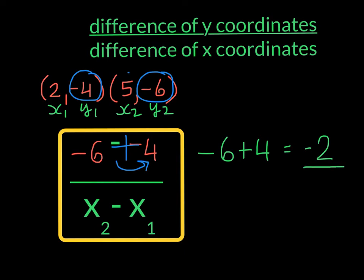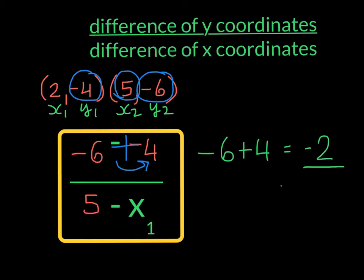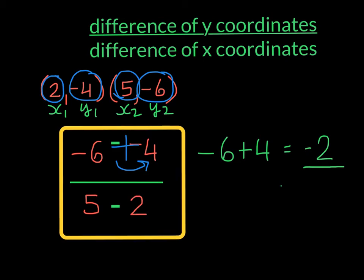Our x2 is 5, so we're going to place it where we see x2. So in the denominator, we have 5 take away 2, which is 3. So our slope is negative 2 thirds.